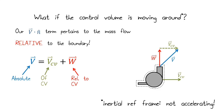Now the question is, what do we do if the control volume is moving around? This is only going to apply to an inertial reference frame, meaning it's not an accelerating control volume. This is something moving at a constant velocity. Our term v dot n pertains to the flow that crosses the boundary relative to that boundary. Let's look at what that looks like.